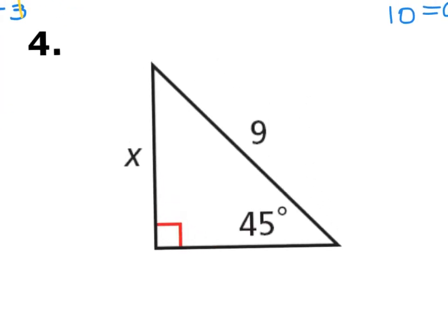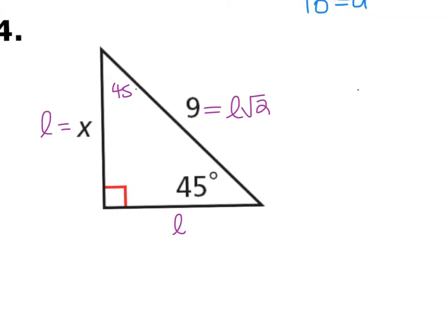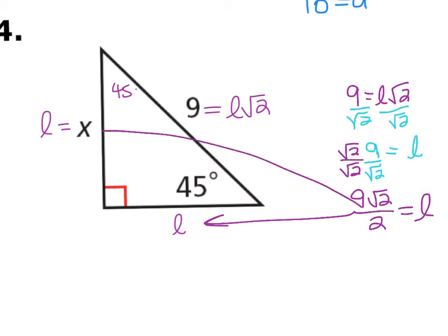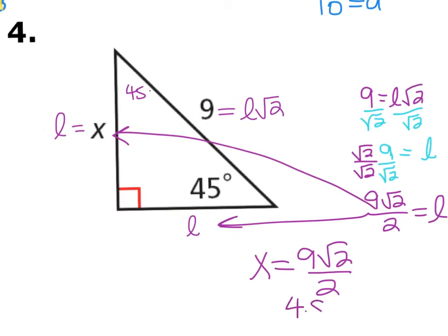Question 4: with a 45° angle marked, this is a 45-45-90 triangle. Opposite the 45° angles are the L legs and opposite the 90° is L√2. The hypotenuse is 9, so 9 = L√2. Divide by √2 and rationalize: L = 9/√2 · (√2/√2) = 9√2/2. That's both your L and your X. This can also be written as 4.5√2.